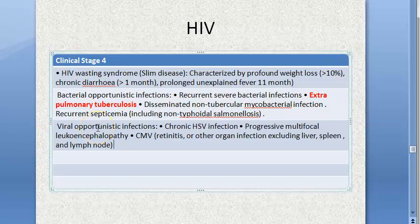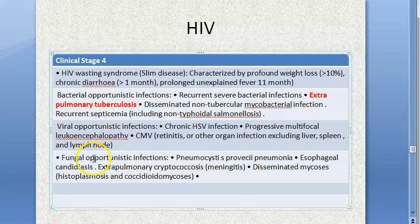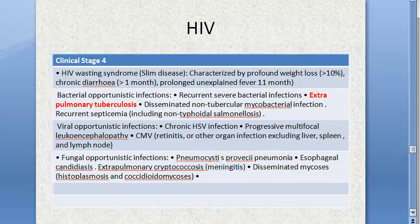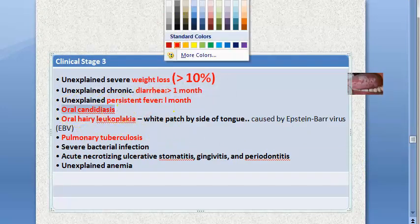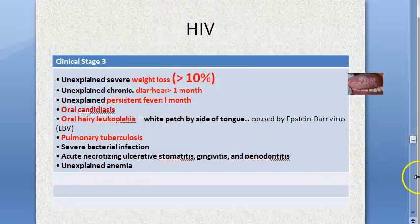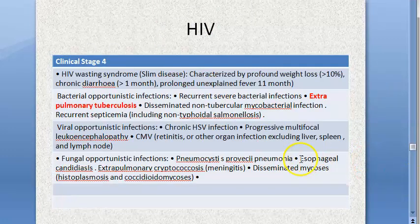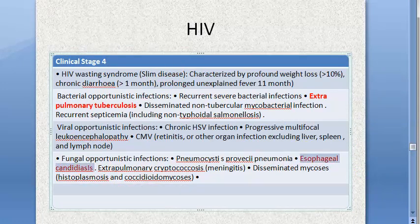Viral opportunistic infections in Stage 4 include herpes simplex and cytomegalovirus. Fungal opportunistic infections include Pneumocystis, esophageal candidiasis, and cryptococcal meningitis. Note that oral candidiasis is Stage 3, but esophageal candidiasis is Stage 4.